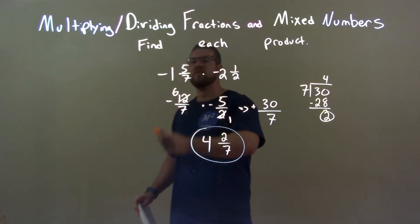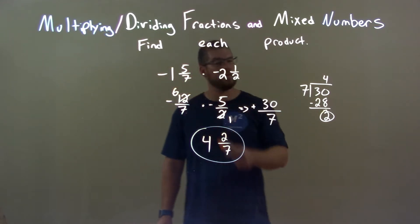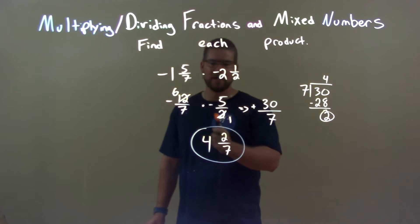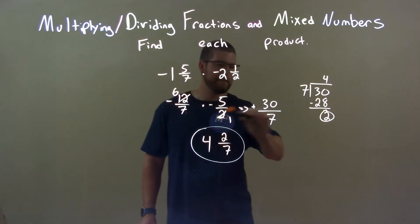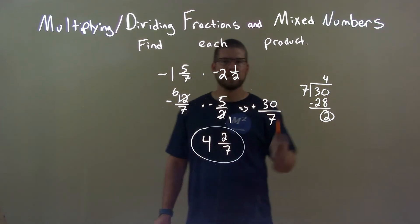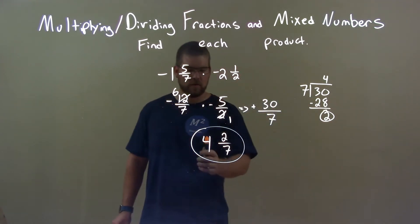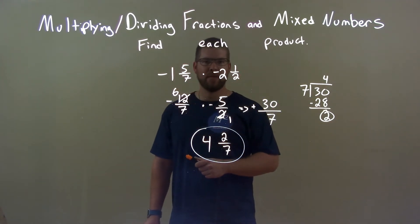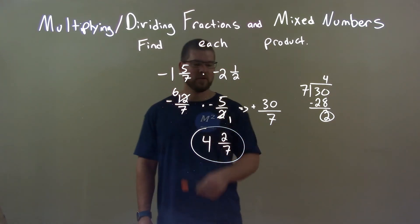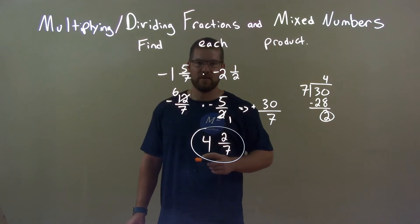So, quick recap. We're given negative 1 and 5 sevenths times negative 2 and 1 half. Converted both of these to improper fractions. Simplified a little bit, then multiplied out. 30 over 7. Then, 7 went into 30 4 times with 2 left over. So, there's 4 here, 2 left over at the top of that fraction. 7 still is in the denominator. So, again, final answer, 4 and 2 sevenths.